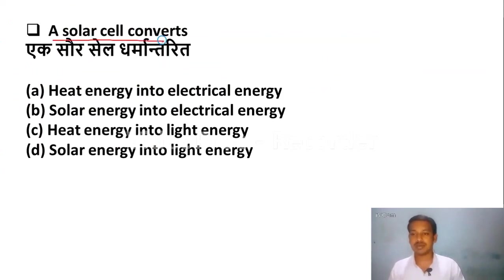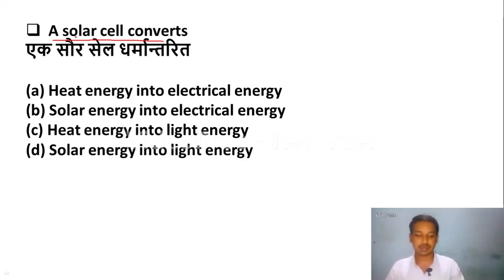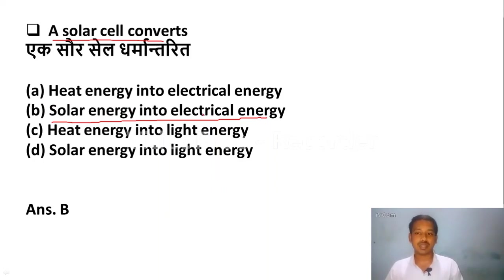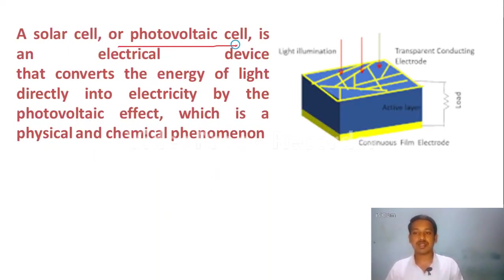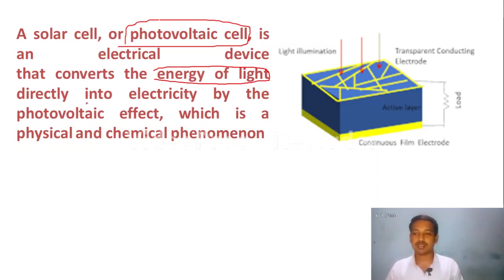A solar cell converts — Option A: heat energy into electrical energy, Option B: solar energy into electrical energy, Option C: heat energy into light energy, Option D: solar energy into light energy. The correct answer is Option B — a solar cell converts solar energy into electrical energy. A solar cell is also known as the photovoltaic cell. It is an electrical device that converts solar energy directly into electricity by the photovoltaic effect.